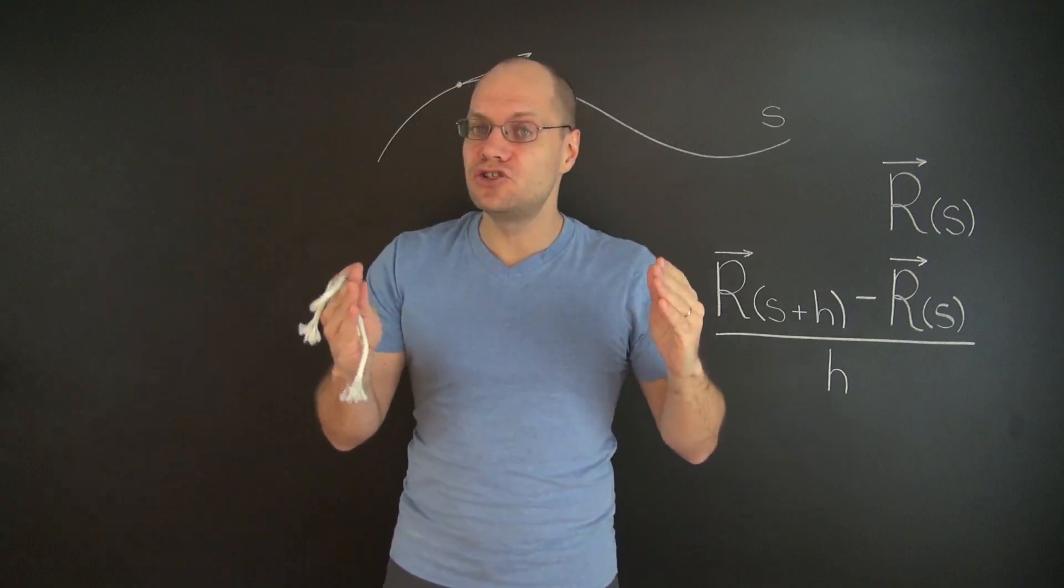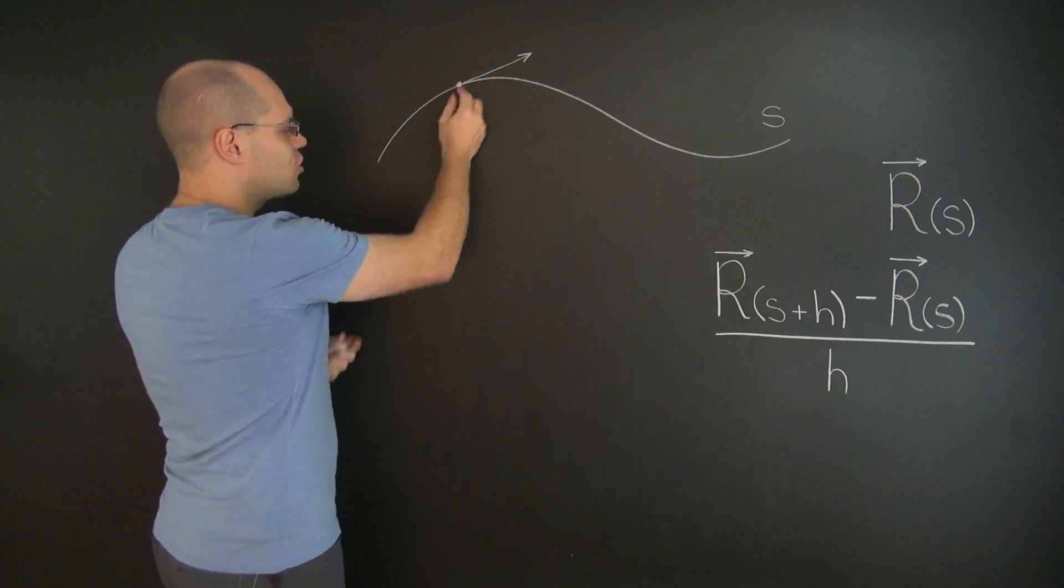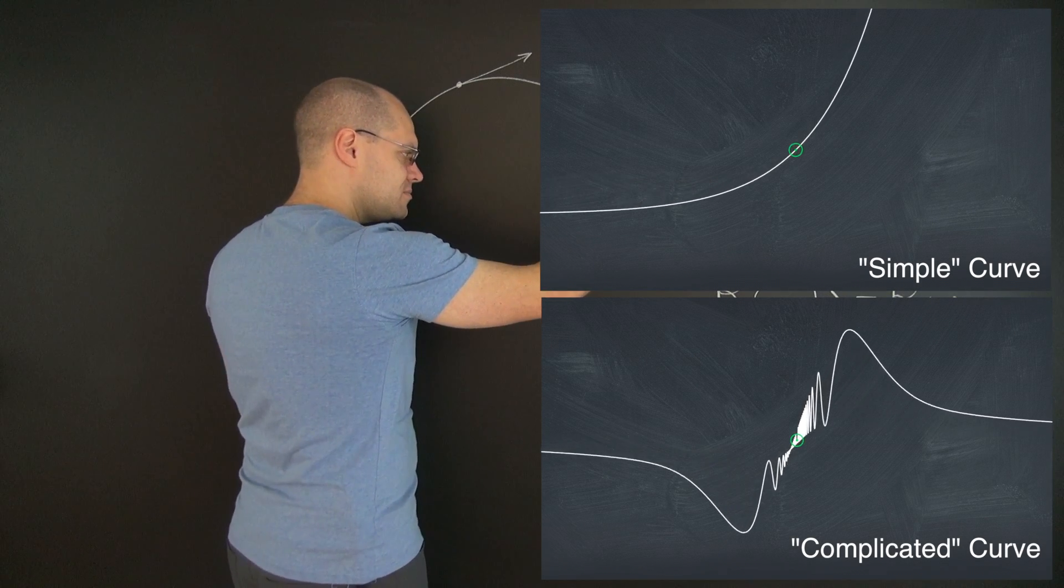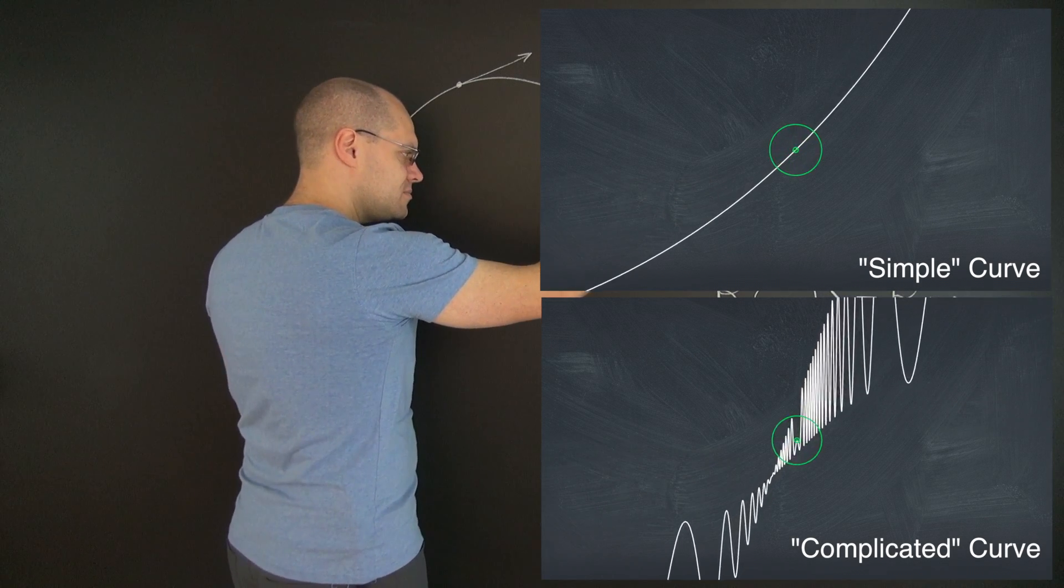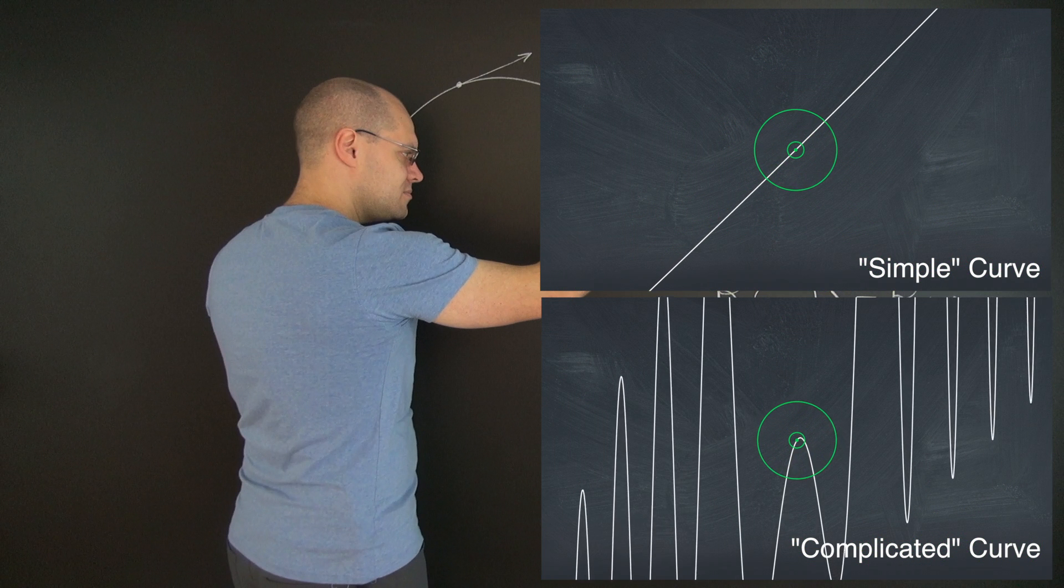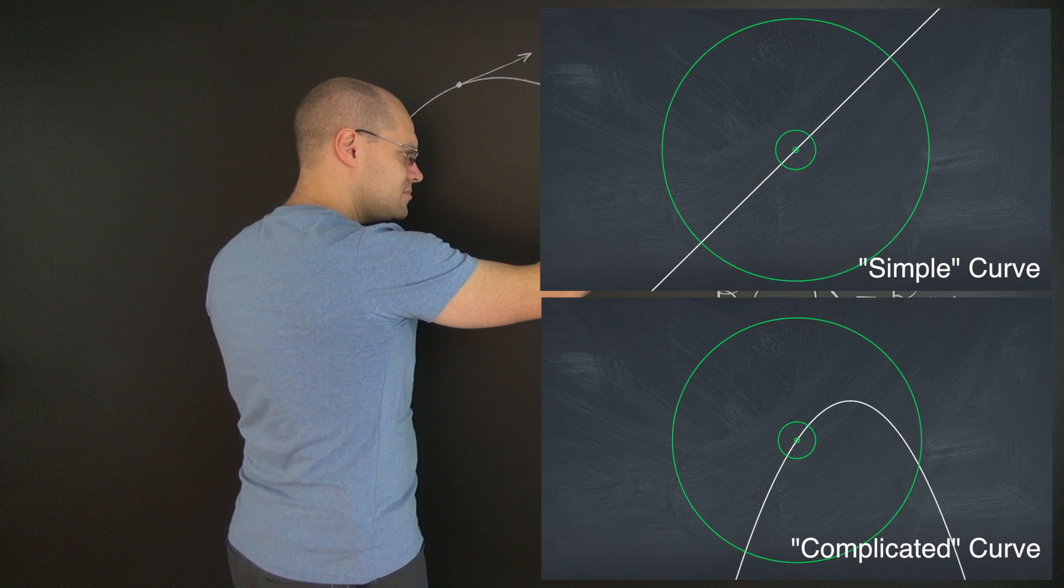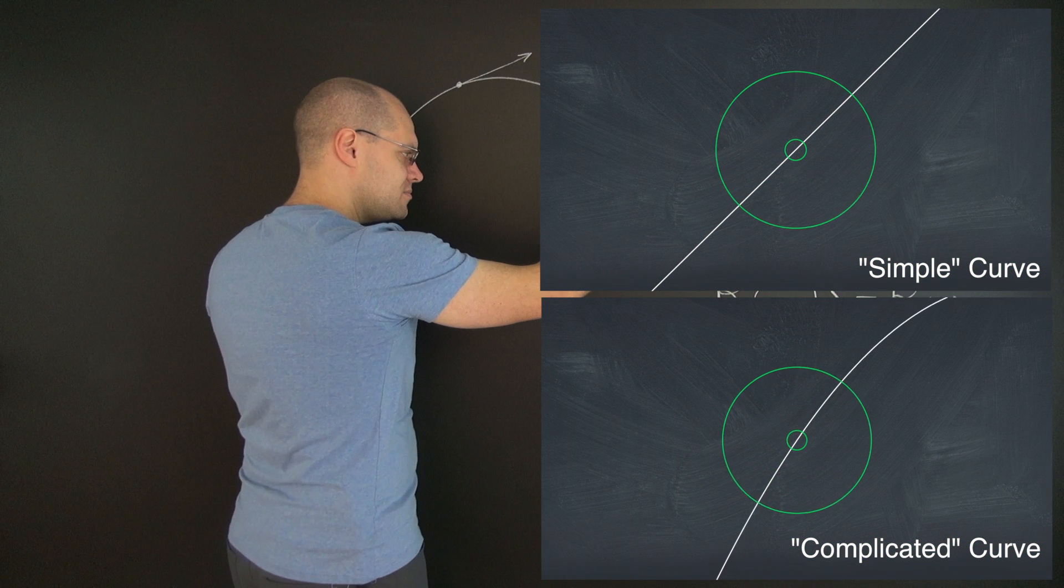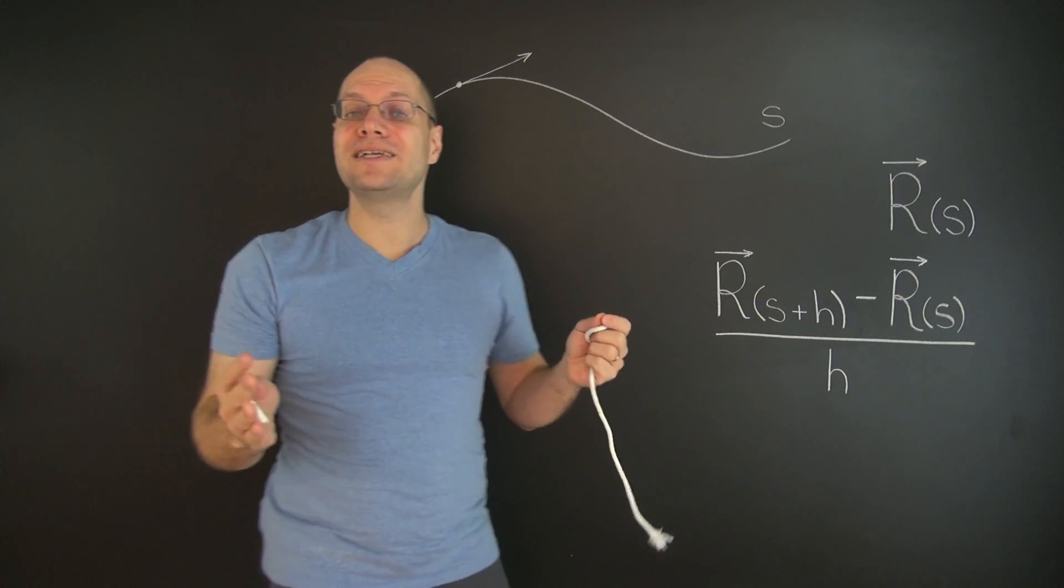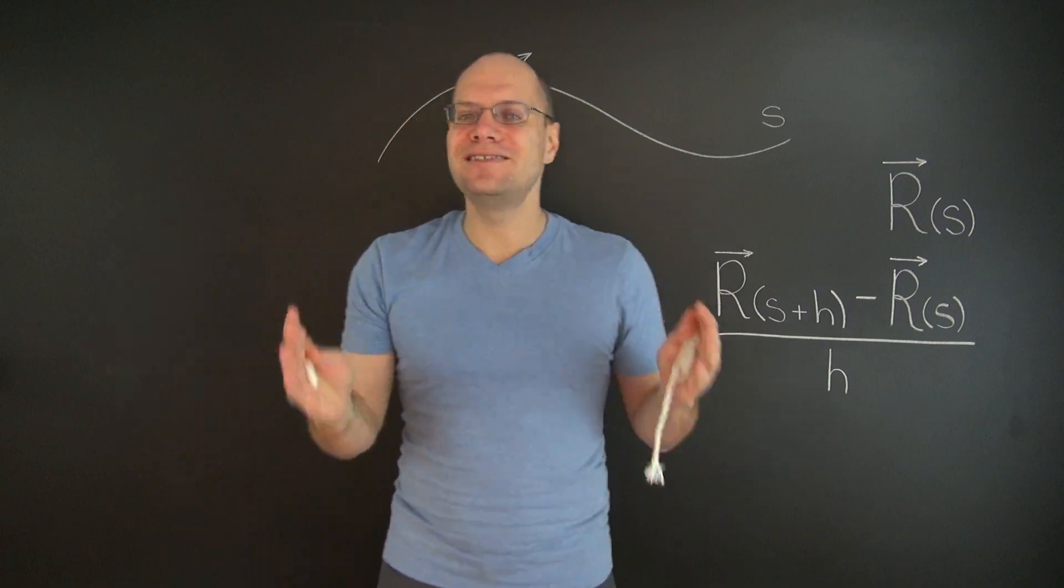Well we will once again use the zoom argument. We will zoom in on this section of the curve so much that the curve will appear straight. So we are once again relying on an infinitesimal argument, which is not ideal.